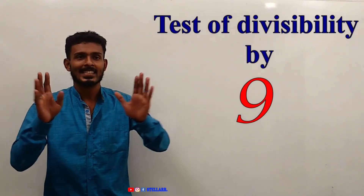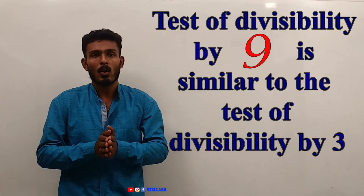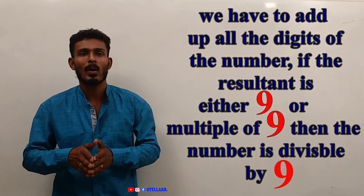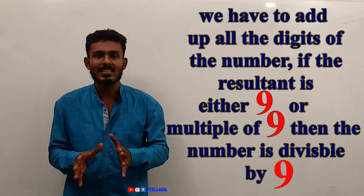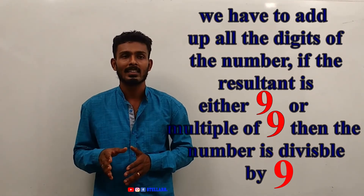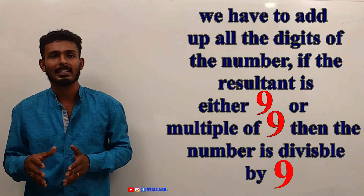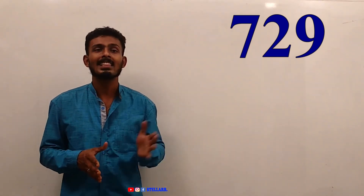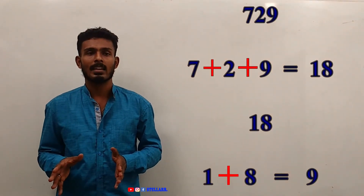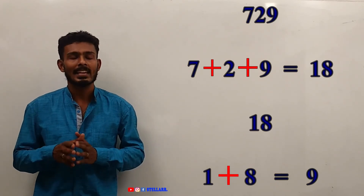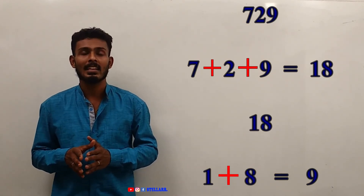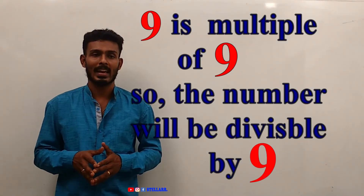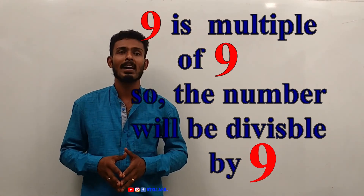Test of Divisibility by 9. The test of divisibility by 9 is similar to the test of divisibility by 3. That is, we have to add up all the digits of the number. If the resultant number is 9 or a multiple of 9, then the number is divisible by 9. Let us take an example: 729. Add all the digits: 7 plus 2 plus 9 gives 18. Again, add the digits: 1 plus 8 gives 9. Since 9 is a multiple of 9, the number 729 will be divisible by 9.